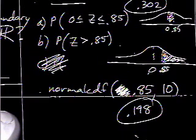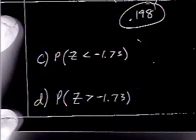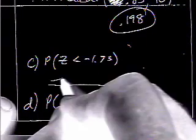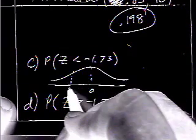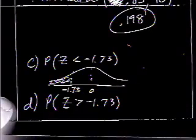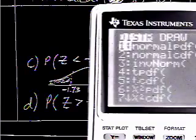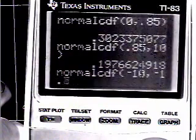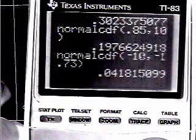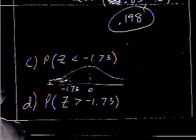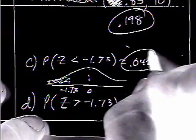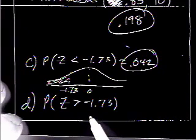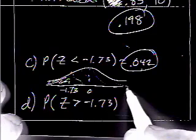So for part B, I got 0.198. Let's look at these next two questions. Probability of Z being less than negative 1.73. So let's see here. Zero, negative 1.73 somewhere out here. And I want the area that's less than that. So this would be a left bound of negative 10 and a right bound of negative 1.73. 0.042. Well, I don't even have to do this. Shouldn't I just be able to subtract this from one to find the other area on the other side? Sure.